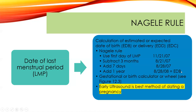Early on, all fetuses are about the same size and have about the same measurements at the same gestation. As we get further along in the pregnancy, those similarities change. A late ultrasound makes it harder to predict gestation based on size because we are all very different. Early ultrasound is the best method of dating a pregnancy, but Naegele's Rule is something you need to know: first day of last menstrual period, subtract three months, add seven days, change the year.